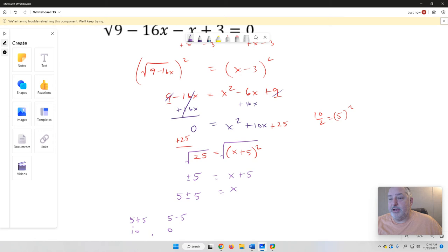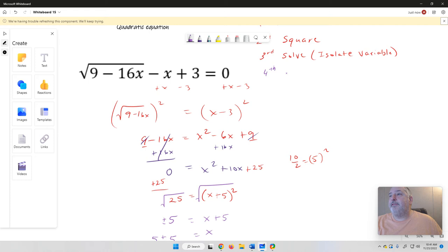So I'm not done yet, because I have a radical here. I have to make sure these are good, viable answers. So I'm going to go back to the beginning. So 4, we have to check solutions.